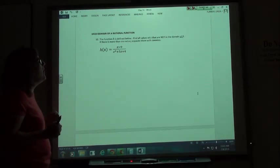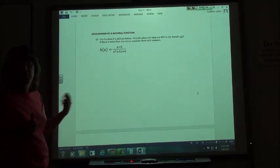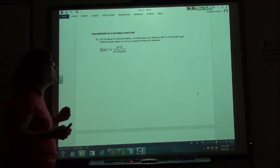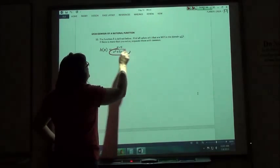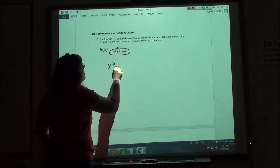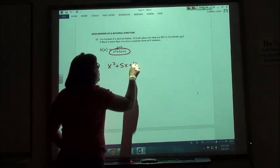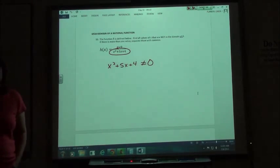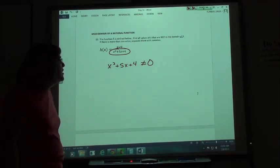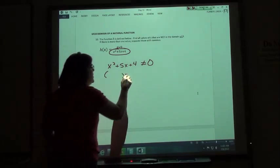It wants us to find all the values of x that are not in the domain, because most values of x will work—there's just a few that won't. So what we're going to do is take whatever's in the denominator, x² + 5x + 4, and we know that it can't equal zero, because otherwise we'll have zero on the bottom of the fraction, which is undefined. So if we solve this...